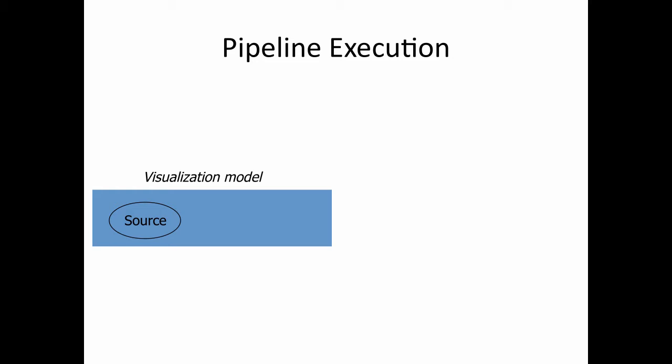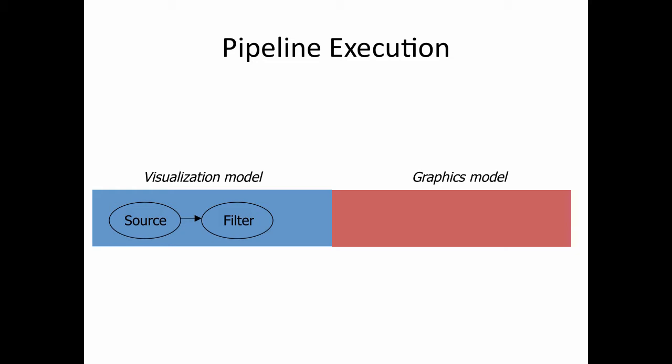Now let's look at the VTK pipeline in more detail. Typically, the pipeline starts from a data source, which is part of the visualization model. The data are sent through one or multiple filters that transform the data into geometries or other displayable formats. The output of the filters is sent to the VTK graphics model. In between the visualization model and the graphics model, there is something called a mapper. A mapper converts the output of filters to something that can be displayed.